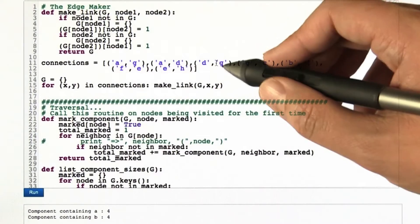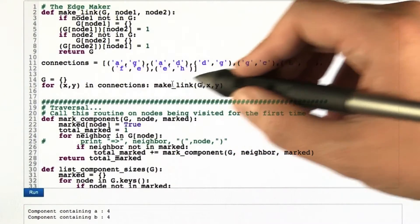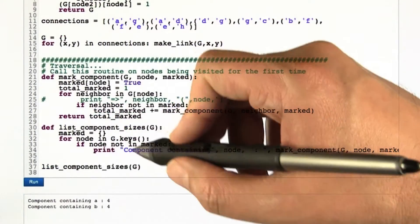I have a list of the connections in that graph that we're just looking at. Nodes A through H. For each of these pairs, I go through and make a link in a graph G.